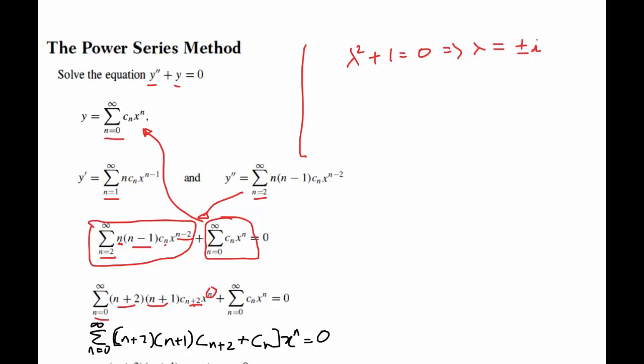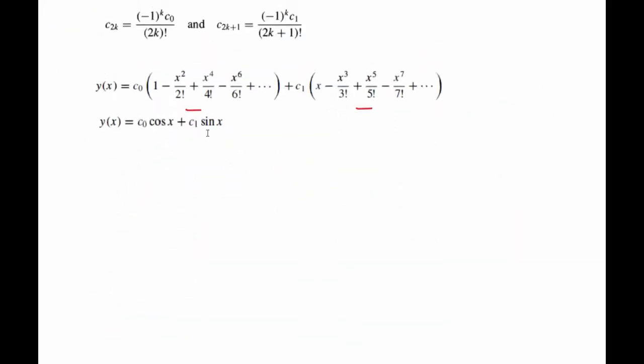And so this tells us that the solution is a cosine x plus b sine x of this homogeneous differential equation. And that's exactly what we got here, c_0 cosine x, c_1 sine x. So they match.